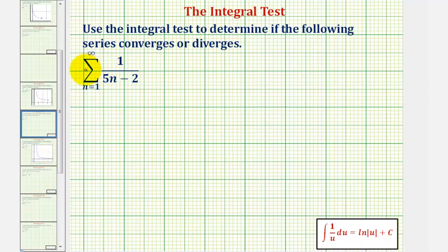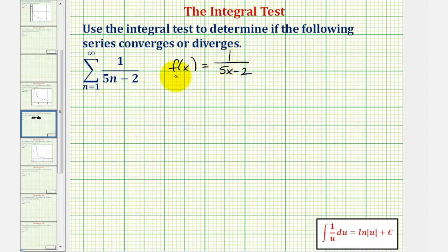Looking at our formula for a sub n, we'll let f(x) be equal to one divided by the quantity five x minus two. Notice f(n) does equal a sub n. We also want to make sure this function is positive, decreasing, and continuous, which we can easily verify graphically.